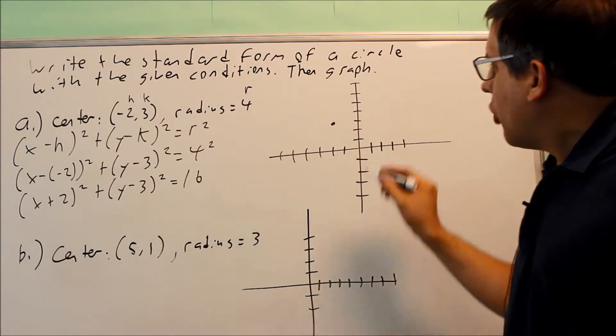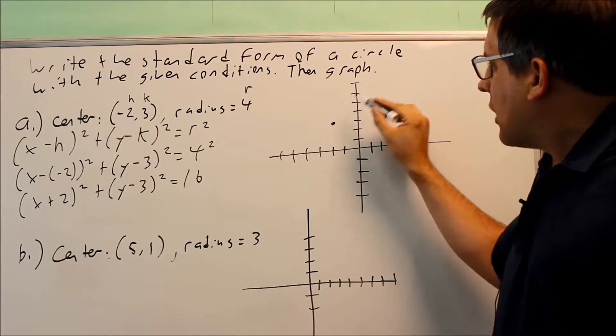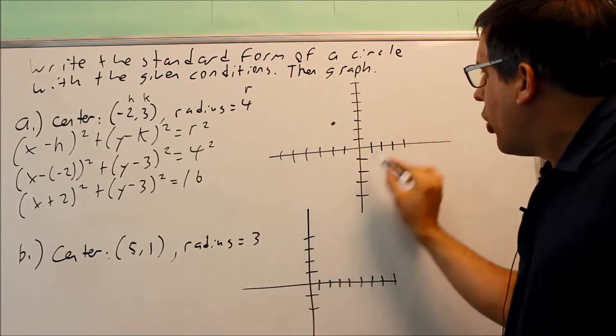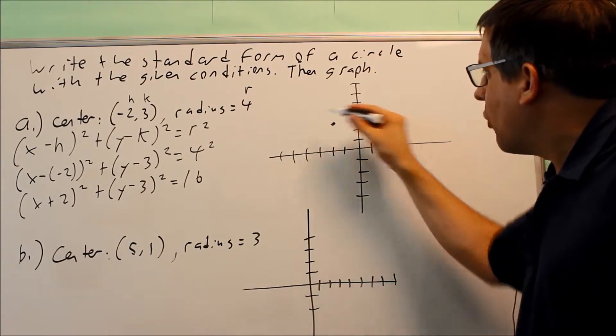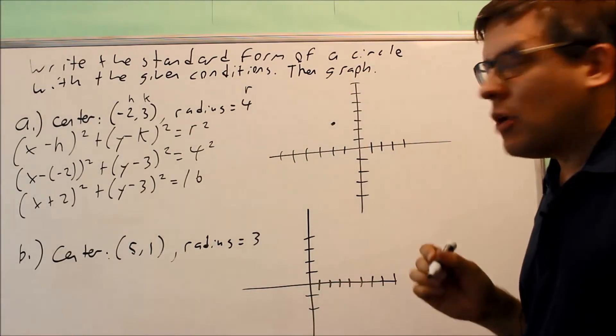Now the radius is 4, which means that's the distance from the center to any point on the outside of a circle. So in order to draw a circle, I want to get a couple reference points so that way I can connect them and make the circle.